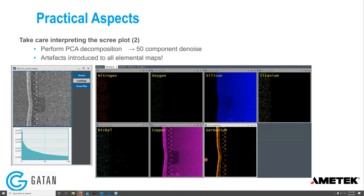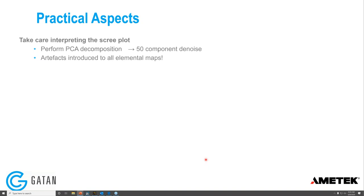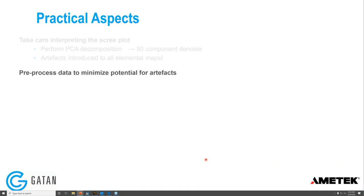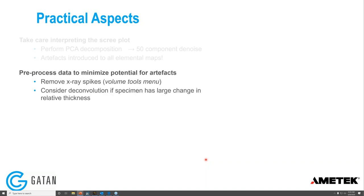It can help to pre-process the data to minimize the potential for artifacts. Always remove x-ray spikes — there's a simple one-click function in the Volume Tools menu — before running MSA decomposition. Consider deconvolution if the specimen has large changes in relative thickness. And you can re-bin the data if it's very noisy to improve the signal-to-noise ratio, also available through the Volume Tools menu.